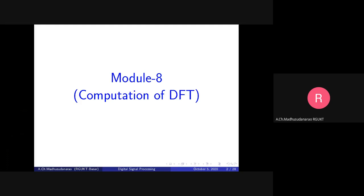Using DFT properties, when you do circular convolution of X of N with H of N, the response in the frequency domain is Y of K equals X of K times H of K. If you want to convert circular convolution into linear convolution, you need to append zeros — you need to go for zero padding for both X of N and H of N, making sure both have the same length L plus P minus 1.